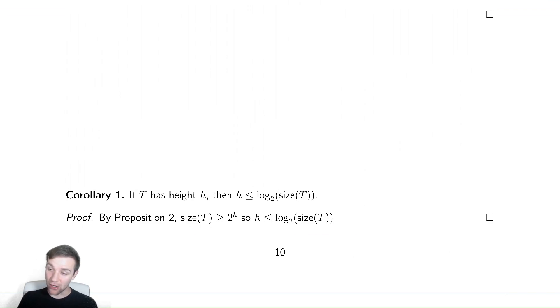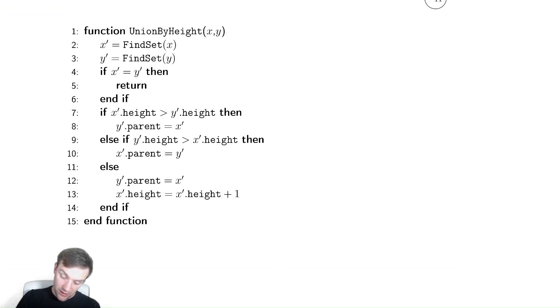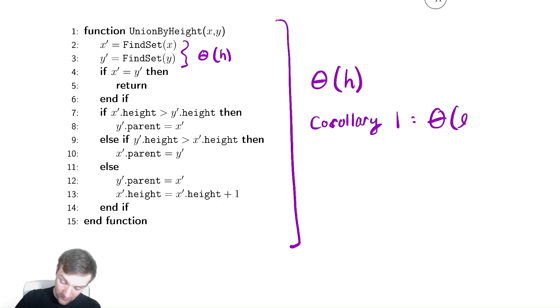And notice that our code, let's scroll all the way back up, our code here needed to perform find set which was in theta of h, so this stuff is in theta of h, which means that this all is in theta of h. And therefore by corollary 1, corollary 1 means that it is in theta of log of n. Therefore it has the exact same runtime as our linked list implementation. So that's promising.